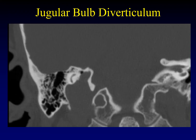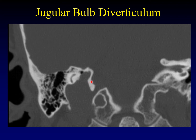Another abnormality of the jugular bulb is a diverticulum. The jugular bulb is quite variable in size depending on whether you're on the dominant side of venous outflow. If you see a small outpouching that is not part of the normal flow, that is a jugular bulb diverticulum. Even in the absence of dehiscence, a jugular bulb diverticulum can still cause pulsatile tinnitus due to its turbulent flow.